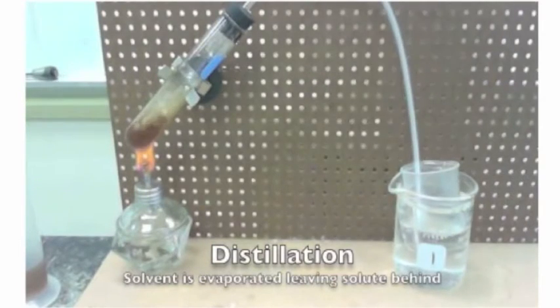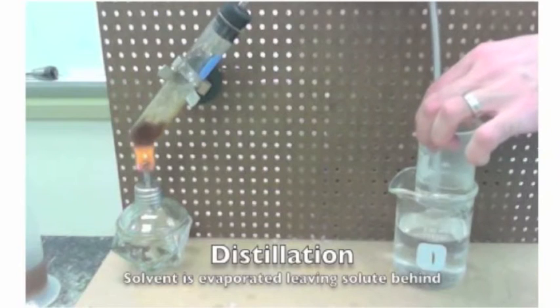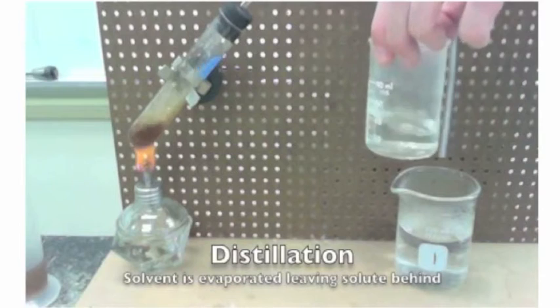So here you can see that water is in a cold bath. As it turns into steam, it will condense when it reaches the cold beaker and turn back into liquid water.